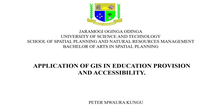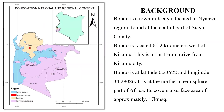I'll take you through the application of GIS in education provision and accessibility. Our study was done in Bondo town, located in the Nyanza region, found at the central part of Siaya County. It is 61 kilometers west of Kisumu, about one hour and 13 minutes drive. It is in the northern hemisphere part of Africa and is approximately 17 square kilometers.